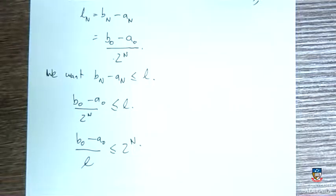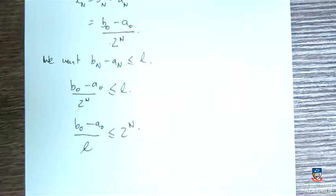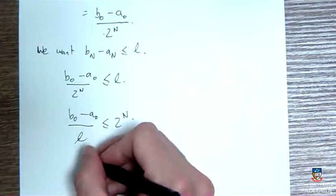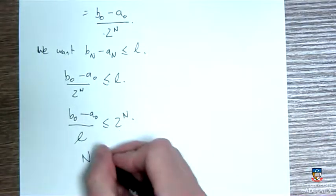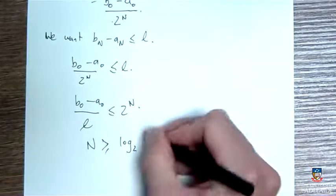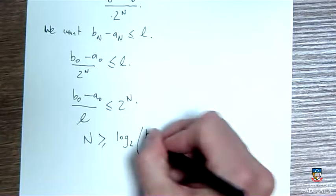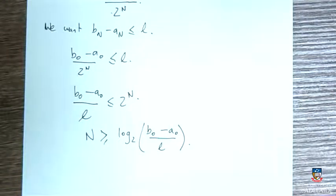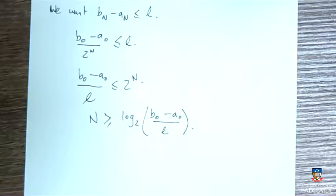I can just take logs of both sides. I'll even take log to the base 2 of both sides. Taking log base 2 of both sides, I'm going to get that n is less than or equal to log base 2 of (b₀ - a₀)/l. So the number of iterations that I have to do to guarantee that my final interval is no larger than this magical value l has got to be that there. And that's just a pretty straightforward calculation.